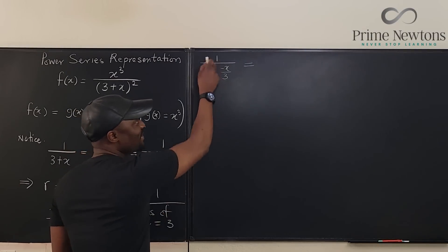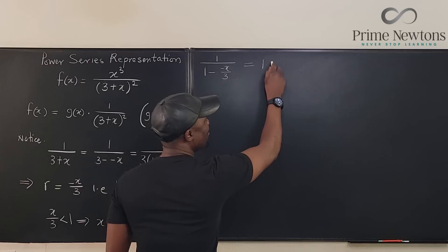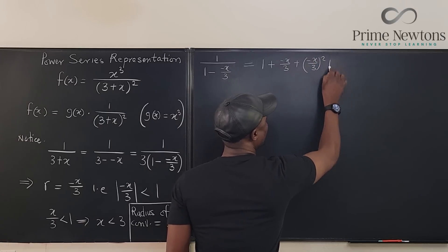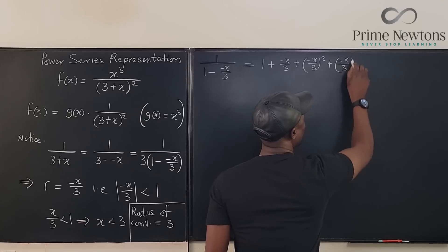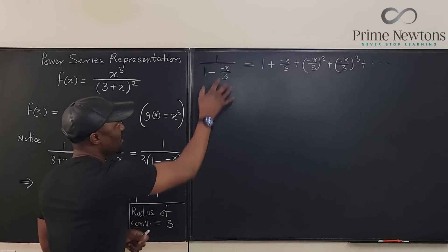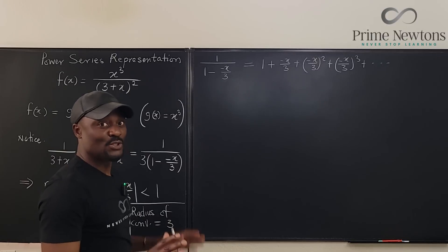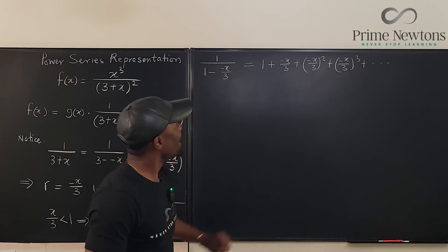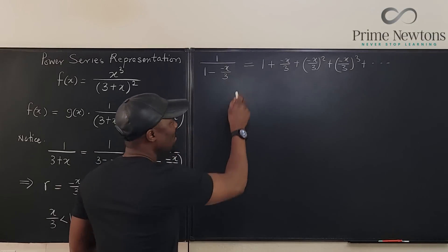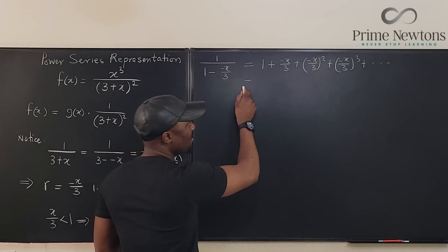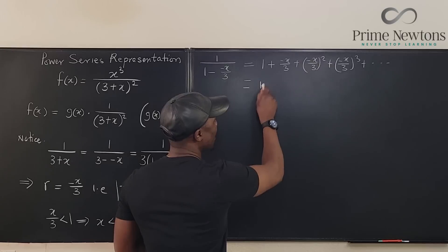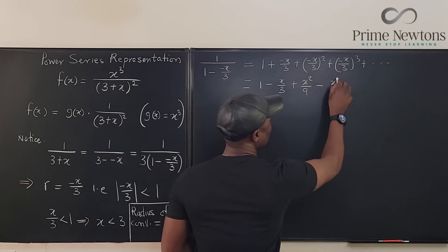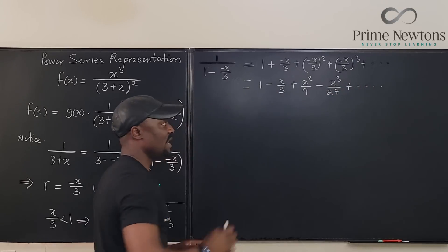Since this matches the geometric series form, we can write: 1 plus (negative x over 3) plus (negative x over 3) squared plus (negative x over 3) cubed, and so on. Expanding the powers gives: 1 minus x over 3 plus x squared over 9 minus x cubed over 27, and so on. This is the power series for just the inside expression, not yet including the factored-out 3.